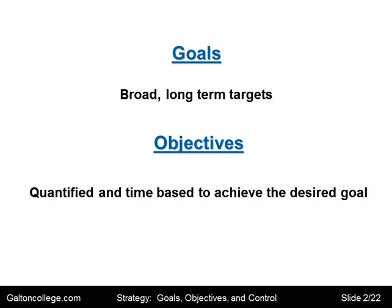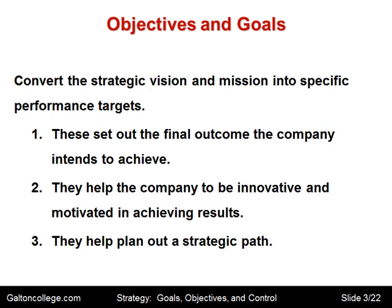The first task is to convert the strategic vision and mission of the business into specific performance targets. These set out the final outcome the company intends to achieve. The specific performance targets are important because they show what the company is aiming at, the final outcome intended. They also help the company to be innovative and motivated in achieving the results. The business needs to know where it's going if it's going to be motivated and look for the best way of achieving the results — it needs direction.